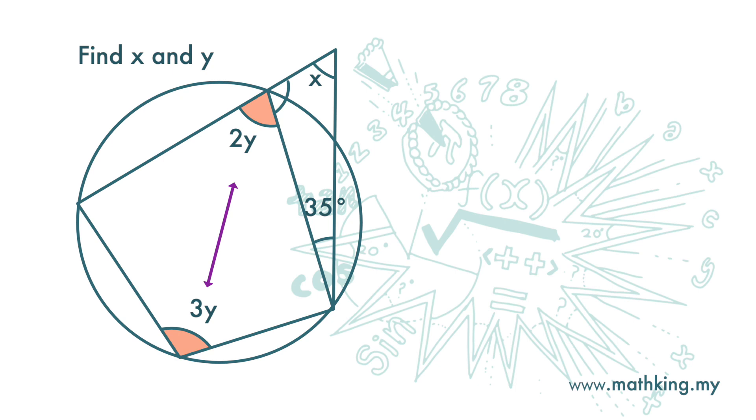The sum of interior opposite angles is 180 degrees. So 2y plus 3y equals 180 degrees. Then y is 180 divided by 5. y is 36 degrees.